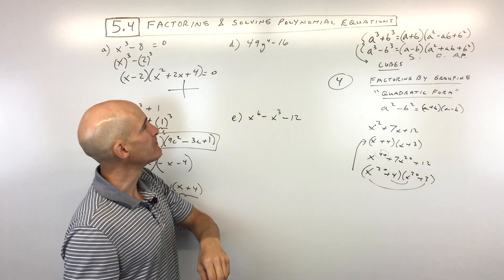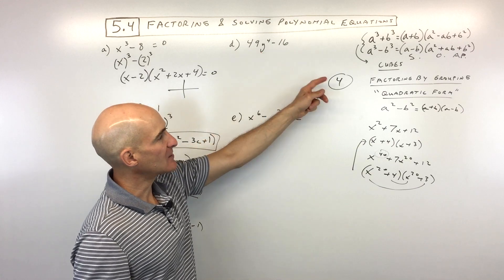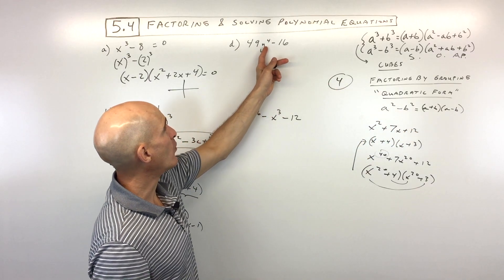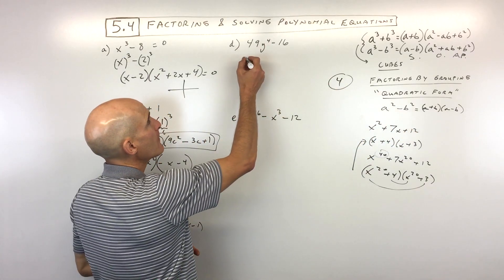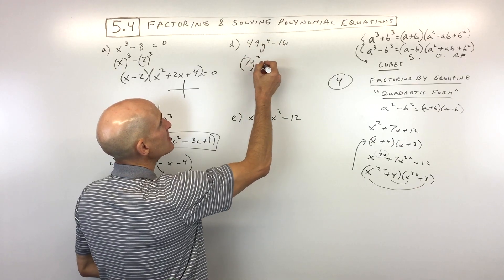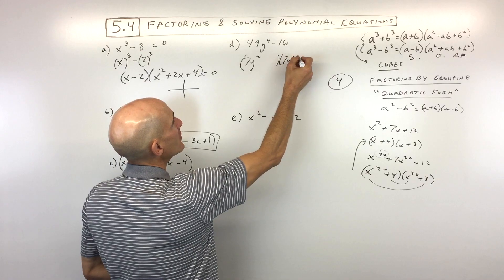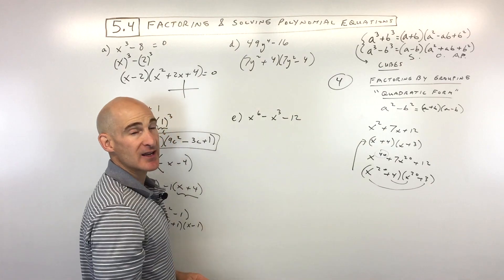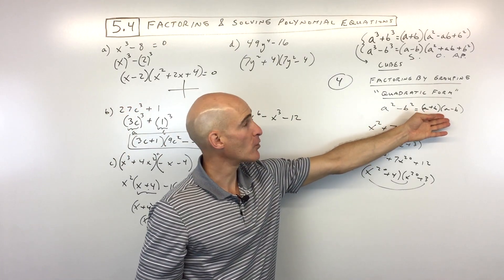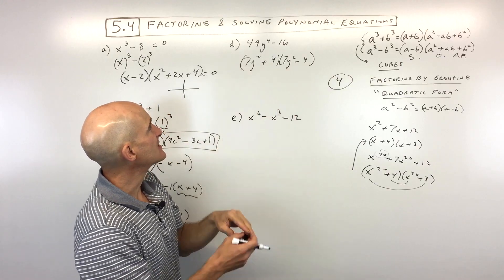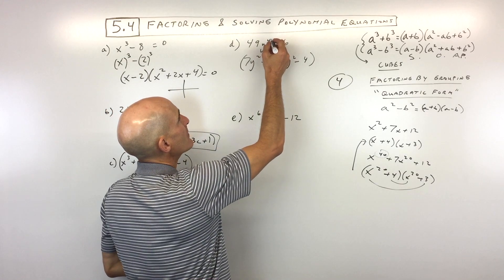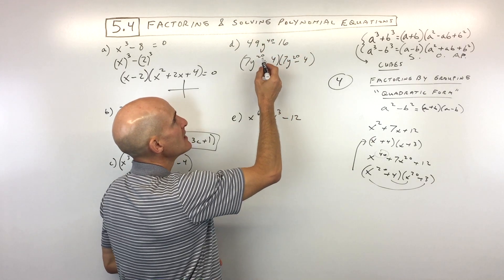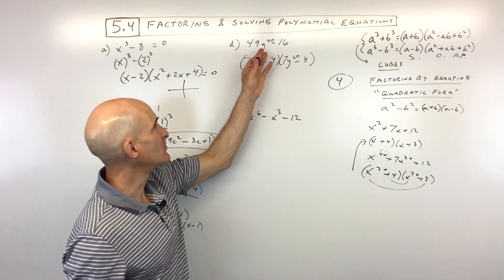For letter D, 49y to the fourth minus 16 looks like the difference of two squares formula a squared minus b squared. The square root of 49y to the fourth is 7y squared, and the square root of 16 is 4. So it factors to 7y squared plus 4 times 7y squared minus 4 using the sum and difference pattern. If the exponent were higher — say the 40th — you'd just use half that exponent: 7y to the 20th.